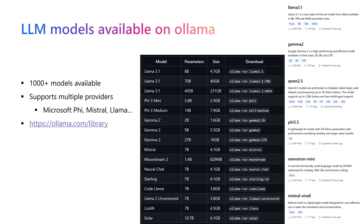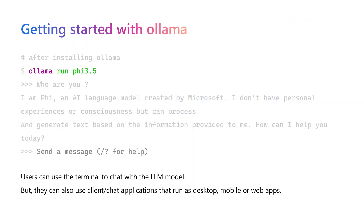Olama enables you to run LLM models — it supports hundreds of different LLM models and versions from different providers like Microsoft, Mistral, LLaMA, and many more. You can check the available models on olama.com/library. Let's look at how to get started using Olama.